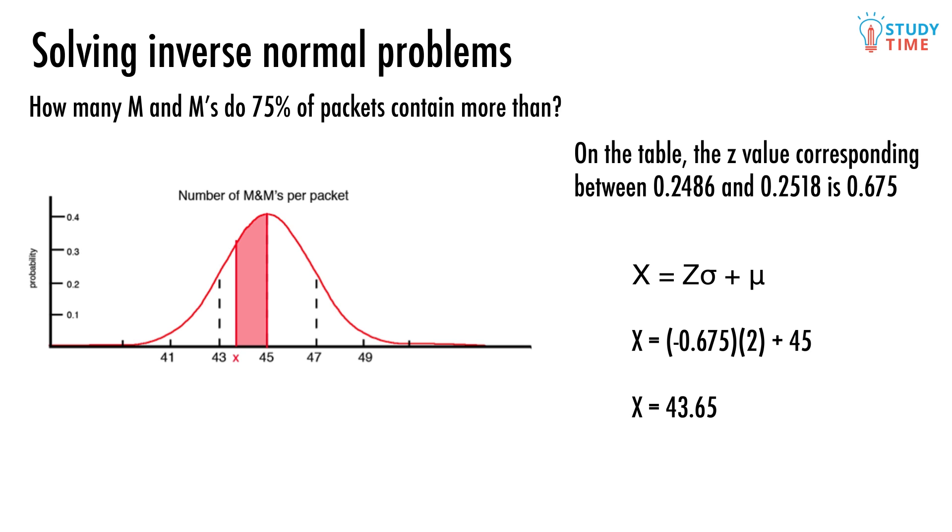This time though, we're trying to find X and not Z, so we need to go and rearrange it like this: X equals Z times σ plus μ. All that's left to do is plug in some numbers that we've already been given for the situation plus the z-value, negative 0.675, that we just found. X equals negative 0.675 times 2 plus 45 equals 43.65.